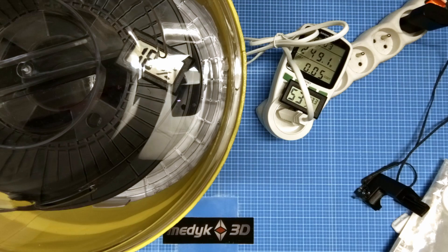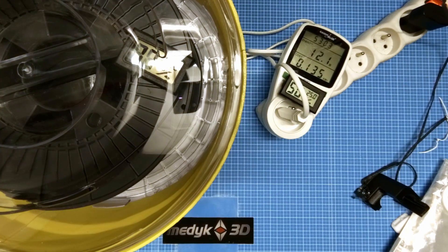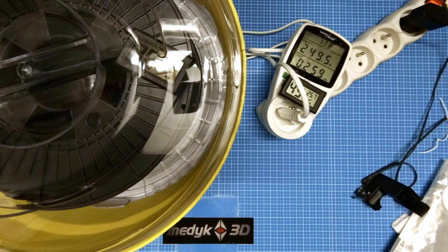The testing setup consists of a wattmeter, one hygrometer outside the dryer and one inside it.